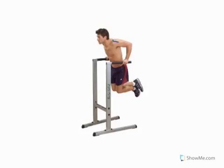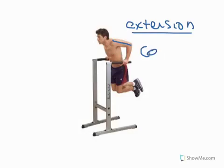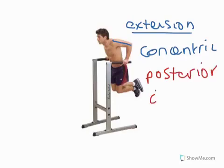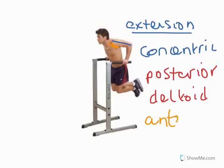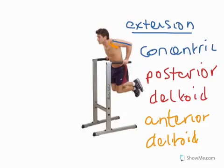In a simpler example, we're going to have a look at a tricep dip. We would describe the position of the shoulder here as extension, which is out behind the body. We would describe this type of contraction as concentric, because the muscle group is shortening as it contracts. That muscle group, which is shortening, we would describe as the posterior, or back, deltoid — the posterior deltoid is the prime mover. The antagonist, shown here in yellow, is this part of the shoulder, which we refer to as the anterior deltoid. The front and back deltoid work as antagonistic pairs against one another.